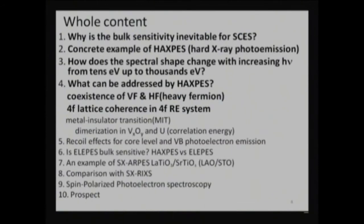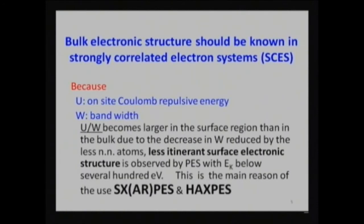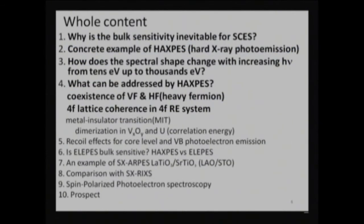The content of my talk is arranged as follows: first I will talk about hard X-ray photoemission spectroscopy — why this technique is inevitable for studying bulk electronic structures, and how the shapes of photoelectron spectra change as a function of photon energy. Some applications on valence fluctuation in heavy fermion systems will be discussed. In the latter half, I will address metal-insulator transition, recoil effects, extremely low energy photoelectron spectroscopy, soft X-ray RIXS, and finally spin-polarized photoelectron spectroscopy.